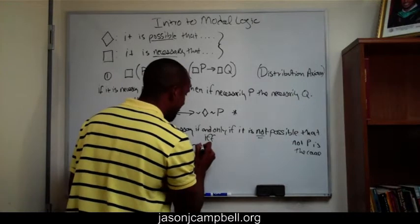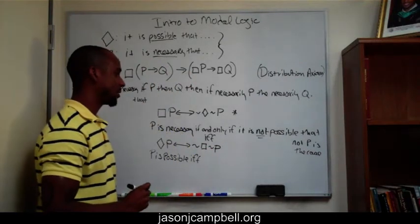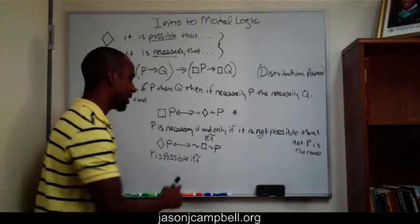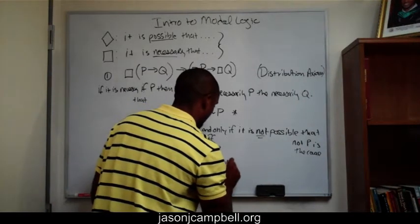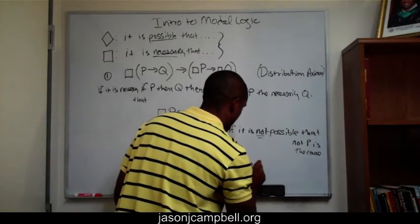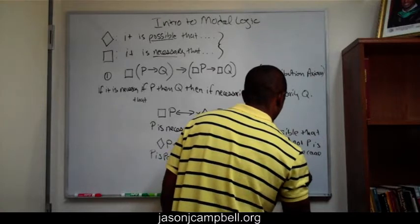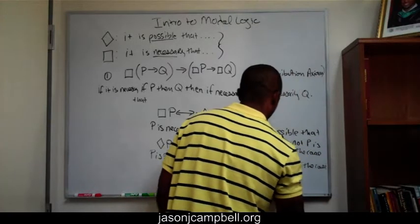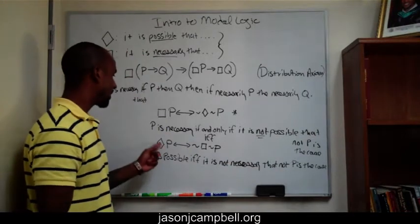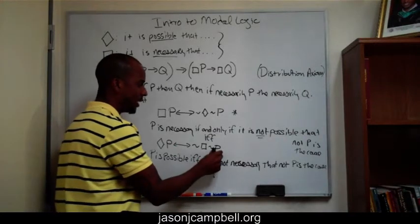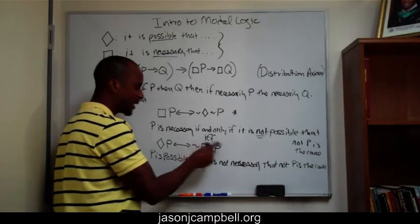P is possible if and only if it is not necessary that not-P is the case. So, this thing is possible if and only if what we're saying is that the non-existence of this thing is not necessary — it's not required. That's basically what this is saying.